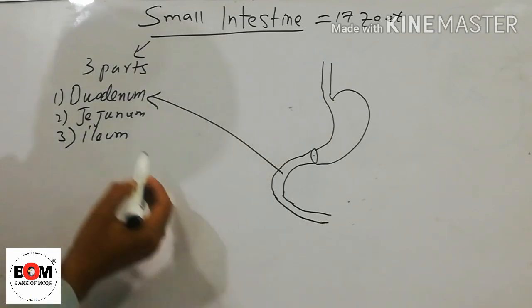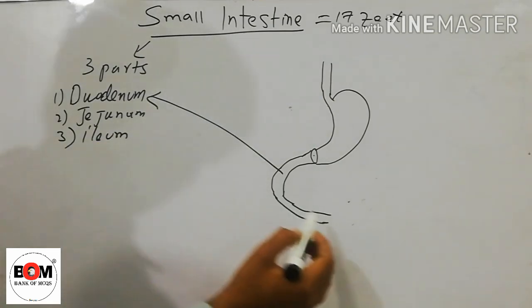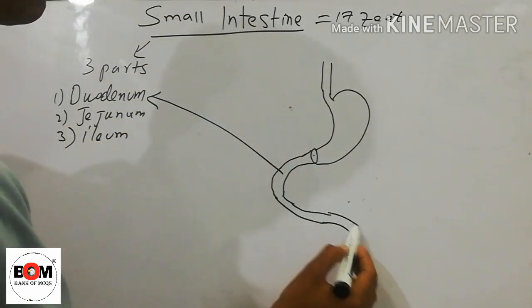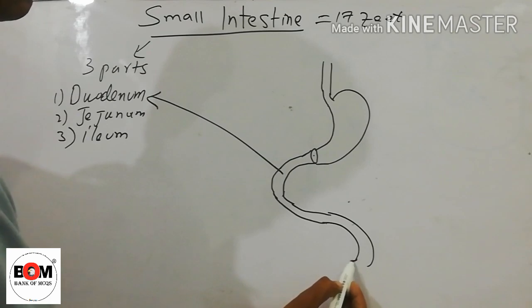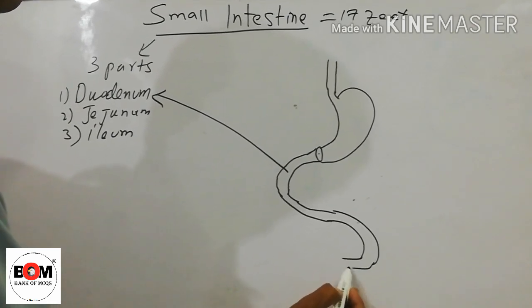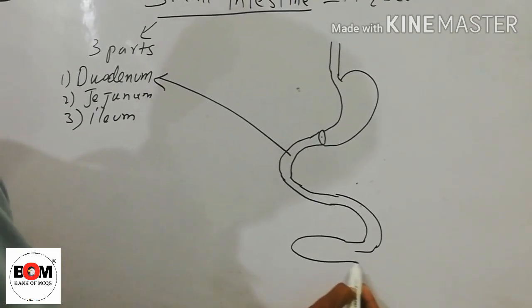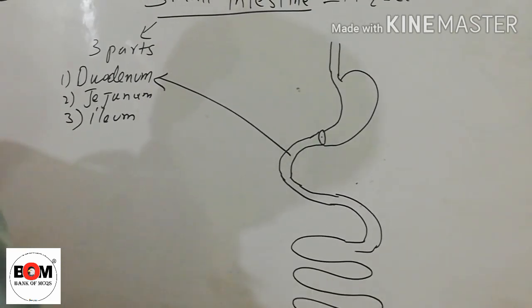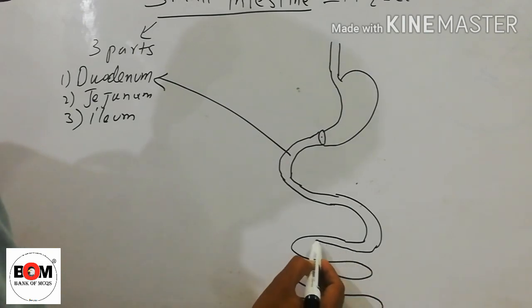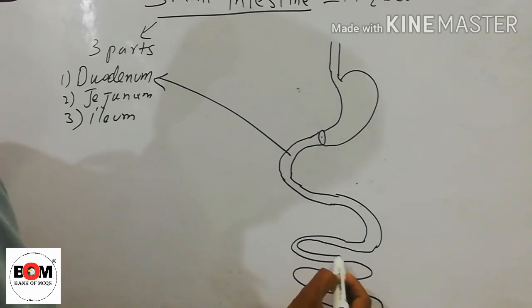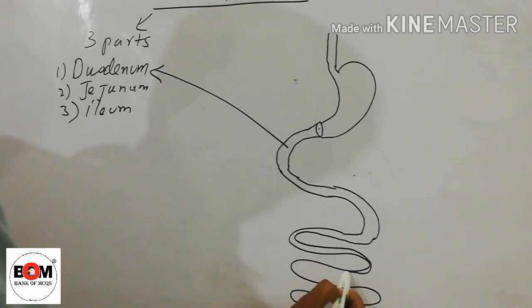The next part is the jejunum. The third part is the ileum. The ileum is the longest part of the small intestine.